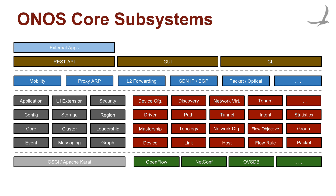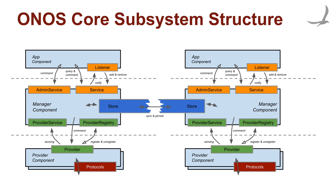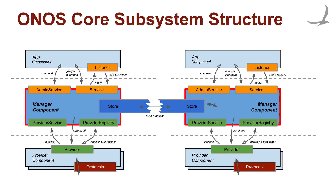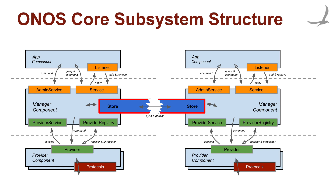To provide a simple and familiar programming model, each core subsystem follows the same high-level pattern of construction and the same design model for both its northbound and, if applicable, southbound APIs. This design revolves around two cooperating components. One is the manager component, which provides the public services both at the northern and southern sides and is primarily concerned with the north-south workflows. The other is the store component, to which the manager delegates the responsibility to store and distribute state, and which hence handles the east-west workflows, including all cluster communications.